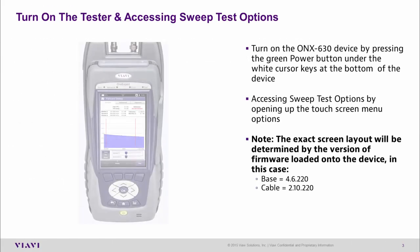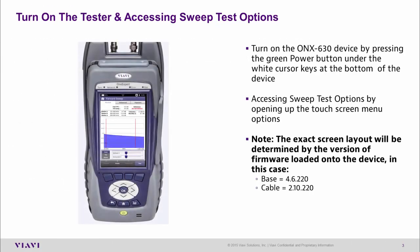We turn on the ONX 630 device by pressing the green power button, which you can see being highlighted on the screen now.